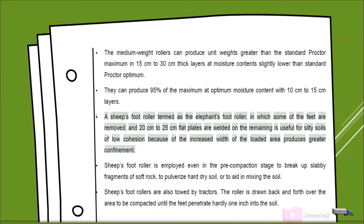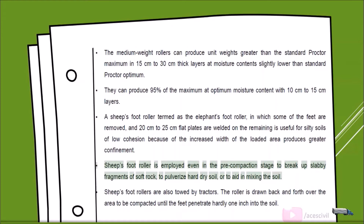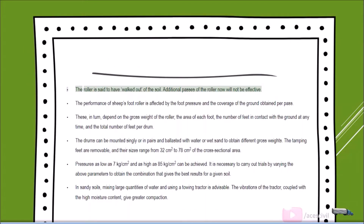A variant called the elephant's foot roller has some feet removed and 20 to 25 cm flat plates welded on the remaining ones. This is useful for silty soils of low cohesion because the increased width of the loaded area produces greater confinement. The sheep's foot roller is also used in pre-compaction to break up slabby fragments of soft rock, pulverize hard dry soil, or aid mixing. The roller is towed back and forth until the feet penetrate barely one inch into the soil — it is said to have 'walked out' of the soil, after which additional passes are ineffective.